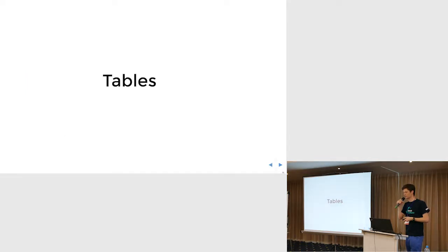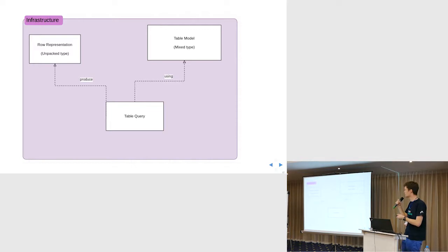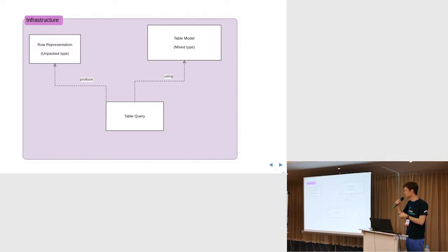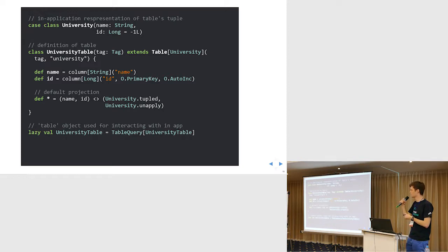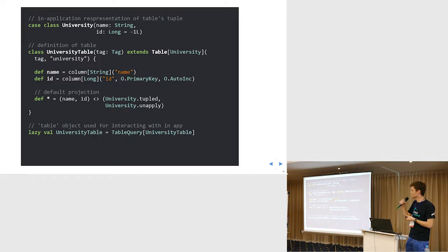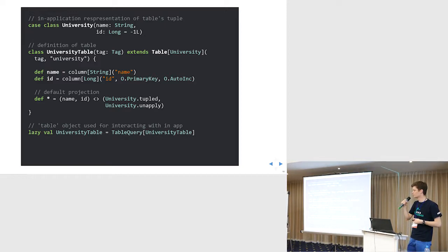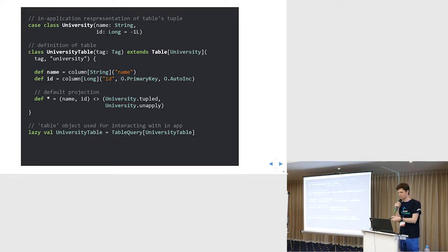To start, we will start with the tables. We need to have the description of the database. We have the table model, the row representation — the representation we will be using in the Scala world — and we have the table query that uses this description of the database to produce our row representations. In code, we have our case class because case classes in Scala are the convenient way to map database tables. We have the definition and description of our table with columns like name and ID, and we have the default projection that tells us how to map those tuples to our case class object. And we have the table query, which is our starting point for building queries.